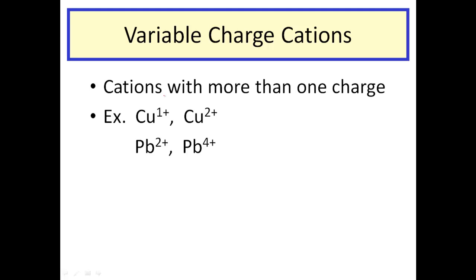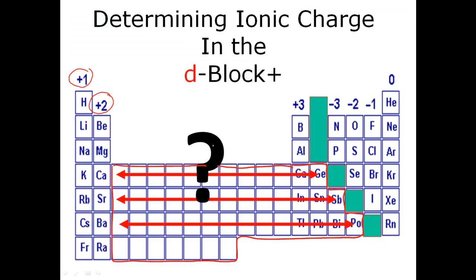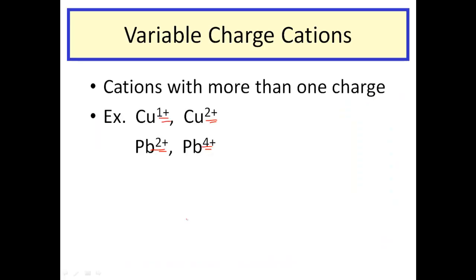The reason we haven't discussed the middle is that those atoms very often have more than one charge — they're known as variable charge cations. For instance, copper can have a 1+ or 2+ charge; lead can have a 2+ or 4+ charge. Those elements don't have a set charge. Everything in the first column is a predictable 2+ charge, but these transition metals don't all have the same predictable charges — which is why they're called variable charge cations.